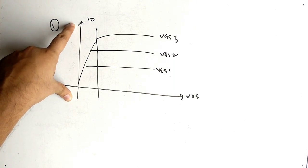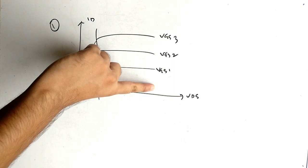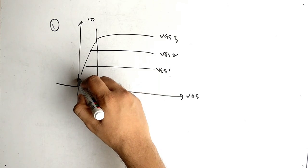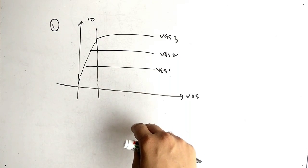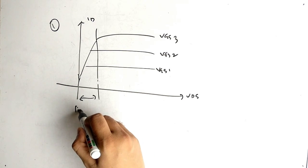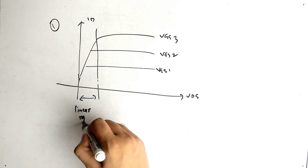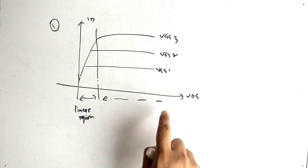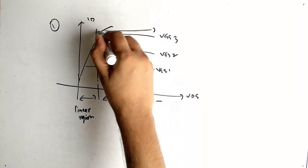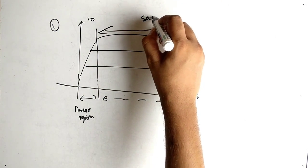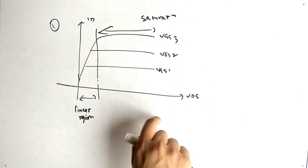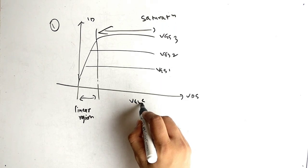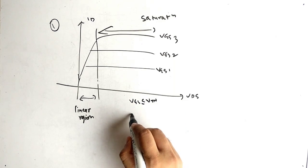The graph has the vertical axis as ID (drain current) and the horizontal axis as VDS (voltage from drain to source). VGS means voltage from gate to source. The graph is divided into regions: this area is the linear region, and this whole area is saturation.